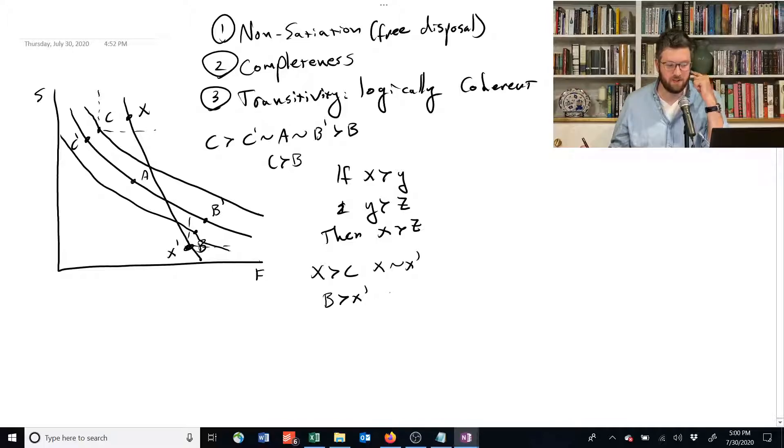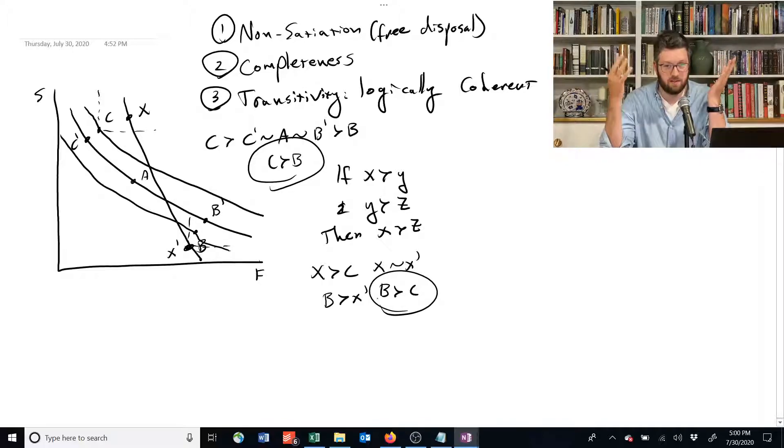We can't say that b is preferred to c based on this, but also that c is preferred to b because of that. Again, we need logically coherent preferences.